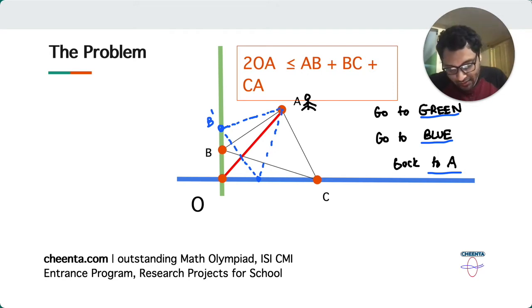You also join the point O to the point A. And this is what you want to show. You want to show that two times OA is less than or equal to the perimeter of the triangle ABC. Two times OA is less than or equal to the perimeter of the triangle ABC. So how are you going to do it?